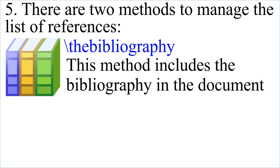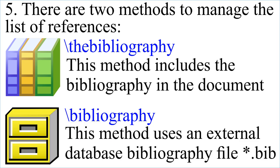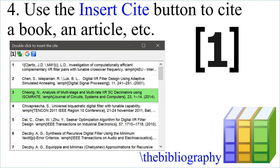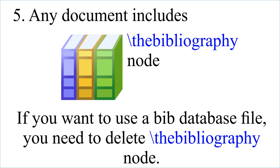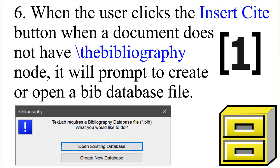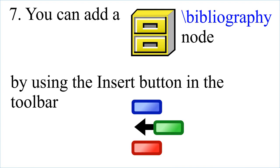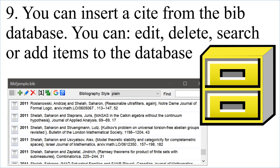There are two methods to manage the list of references. The first method includes the bibliography directly in the document. The second method uses an external BibTeX database file. Use the Insert Cite button to cite a book, an article, etc. Any document includes a bibliography node. If you want to use a BibTeX database file, you need to delete the bibliography node. When the user clicks the Insert Cite button and no bibliography node exists, it will prompt to create or open a BibTeX database file. You can add a bibliography node using the Insert button in the toolbar, insert a citation from the BibTeX database, and edit, delete, search, or add items to the database.